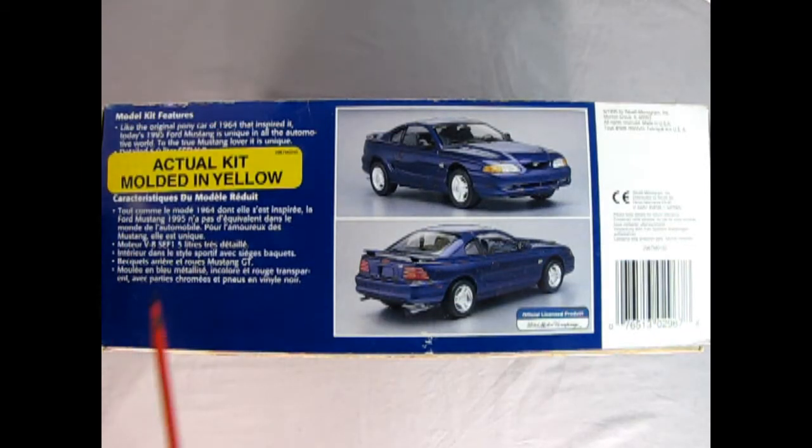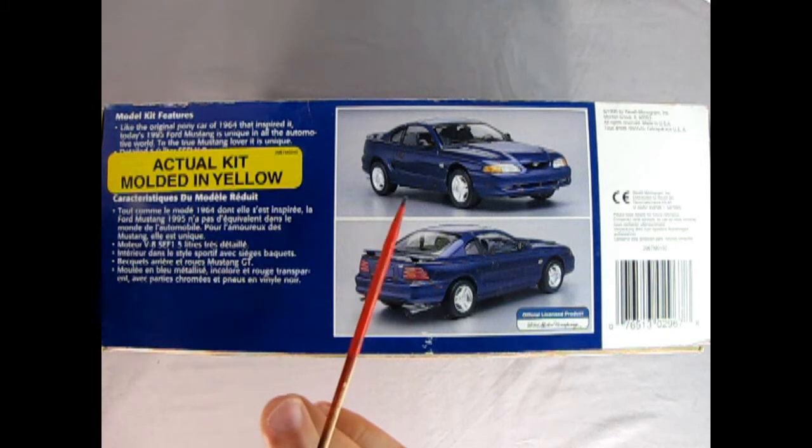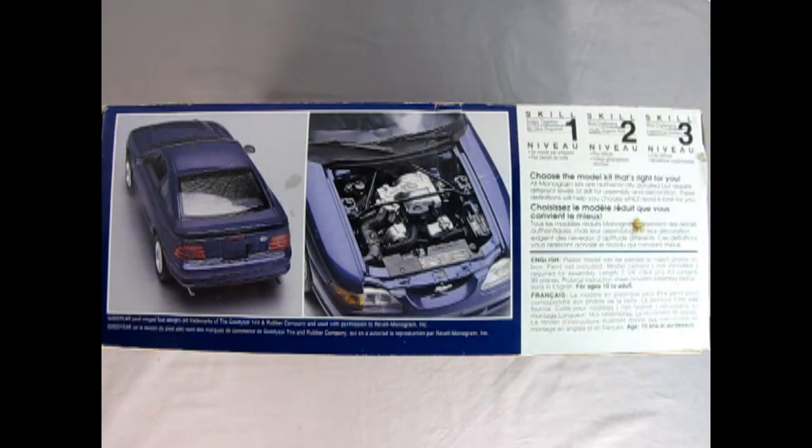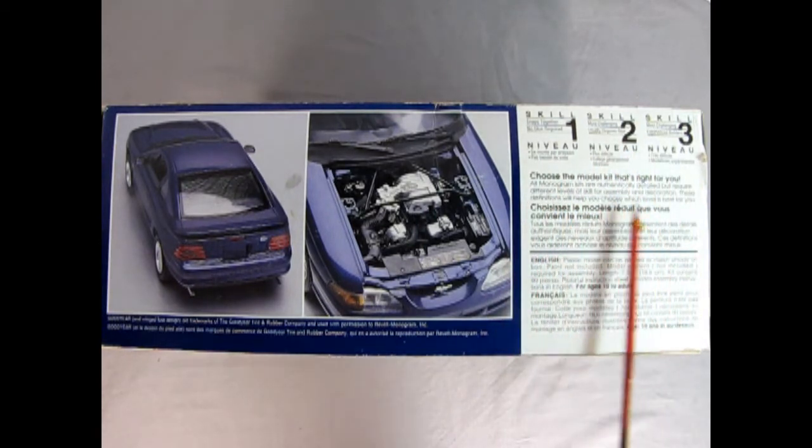On this side of the box we are confronted with this gigantic sticker that says actual kit molded in yellow. The model kit features are right here and then we've got our front three-quarter and our rear three-quarter of the 95 Mustang, and you can see just how they styled it, basically like the 64 with that same kind of grill in front and the lights in the back. On this side of the box we get the wonderful rear three-quarter shot of our model as well as the under hood details. Here you can see a lot of the decals used in the kit and that nice plenum, and then here we've got the skill level.